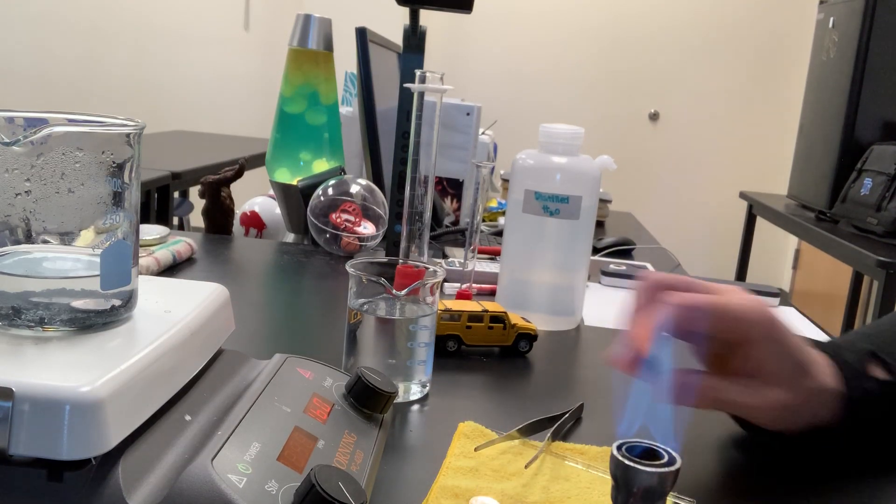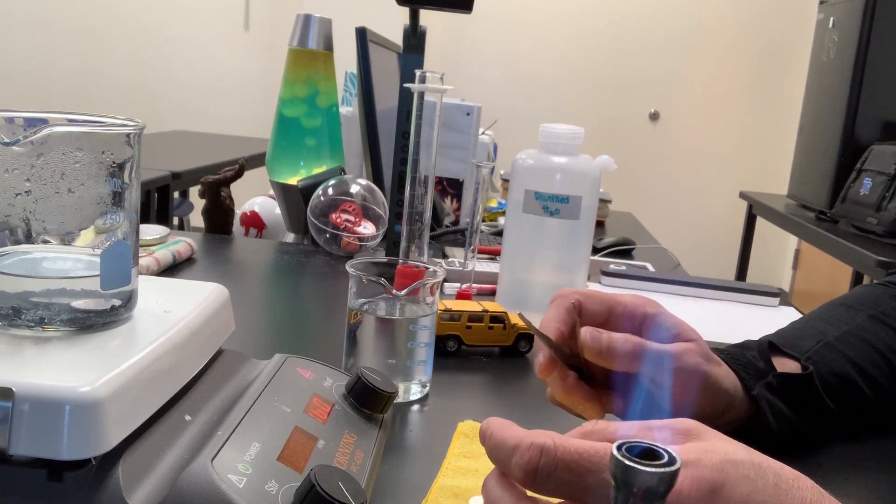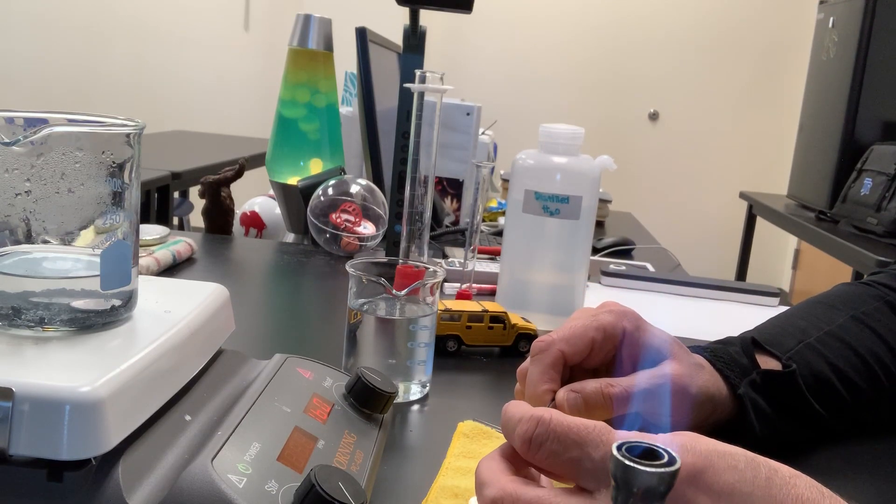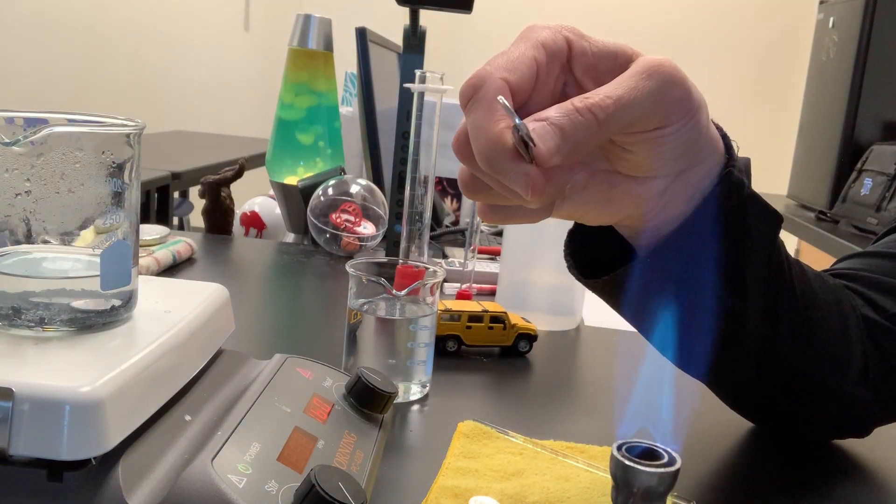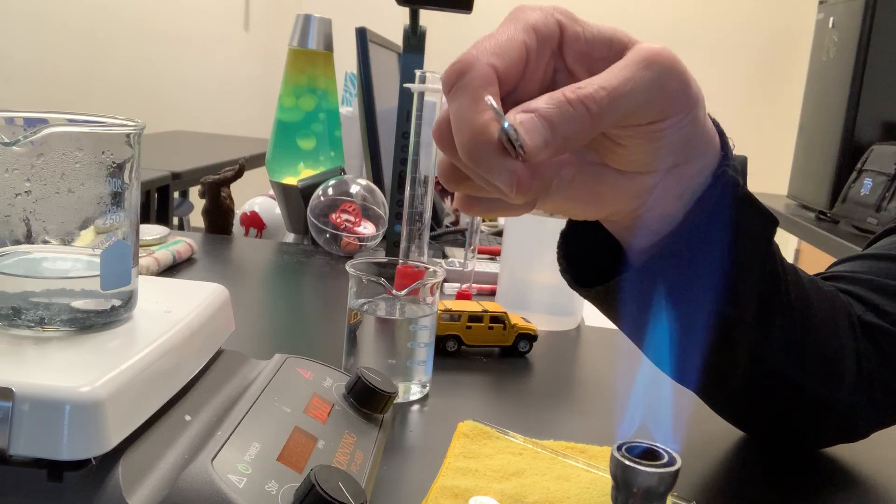Got a nice hot flame, and I want to heat my zinc-coated pennies at the tip of the inner blue cone here. We need to get the top zinc atoms excited enough to mix with the copper atoms on the bottom. So here we go.